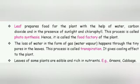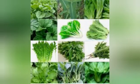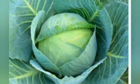The loss of water in the form of gas — that is, water vapor — happens through the tiny pores in the leaves. This process is called transpiration. It gives a cooling effect to the plant. Leaves of some plants are edible and rich in nutrients. For example, greens and cabbage.